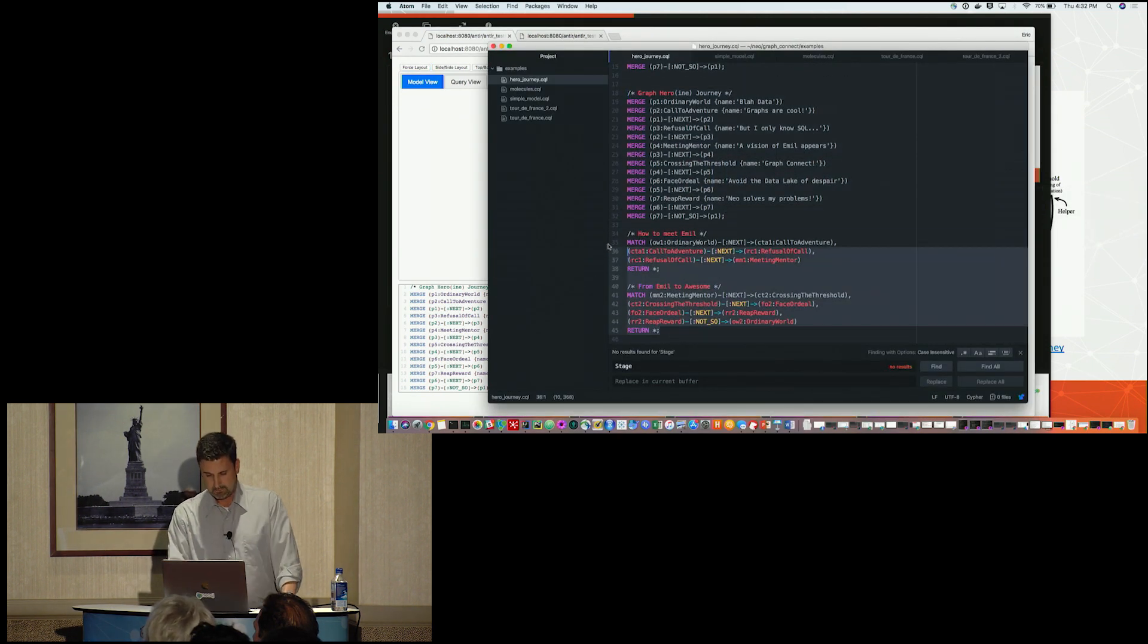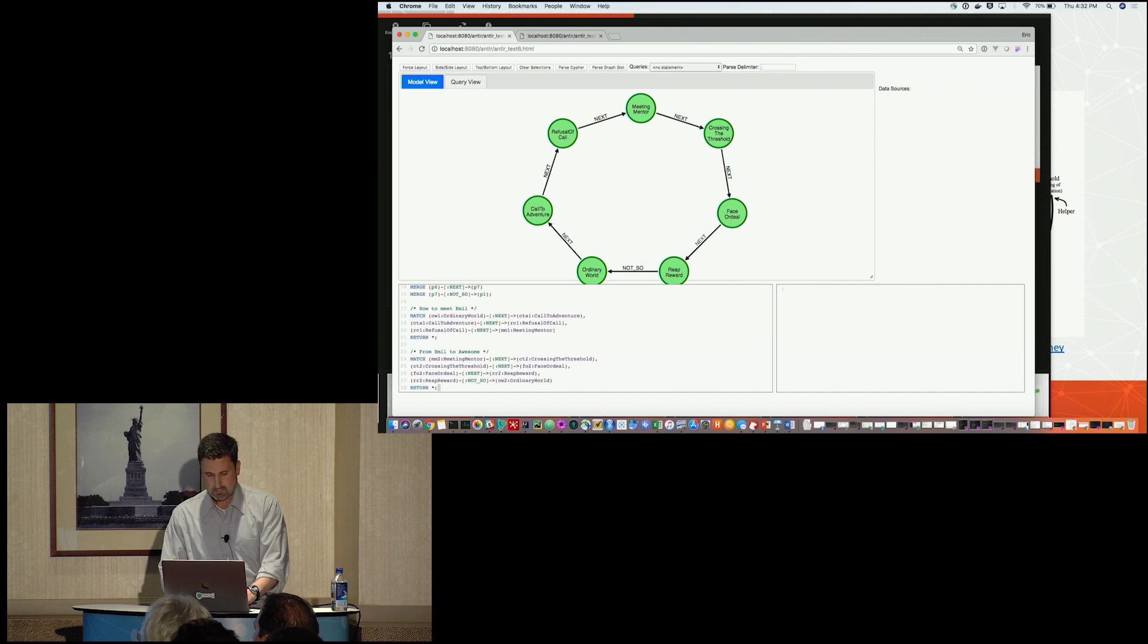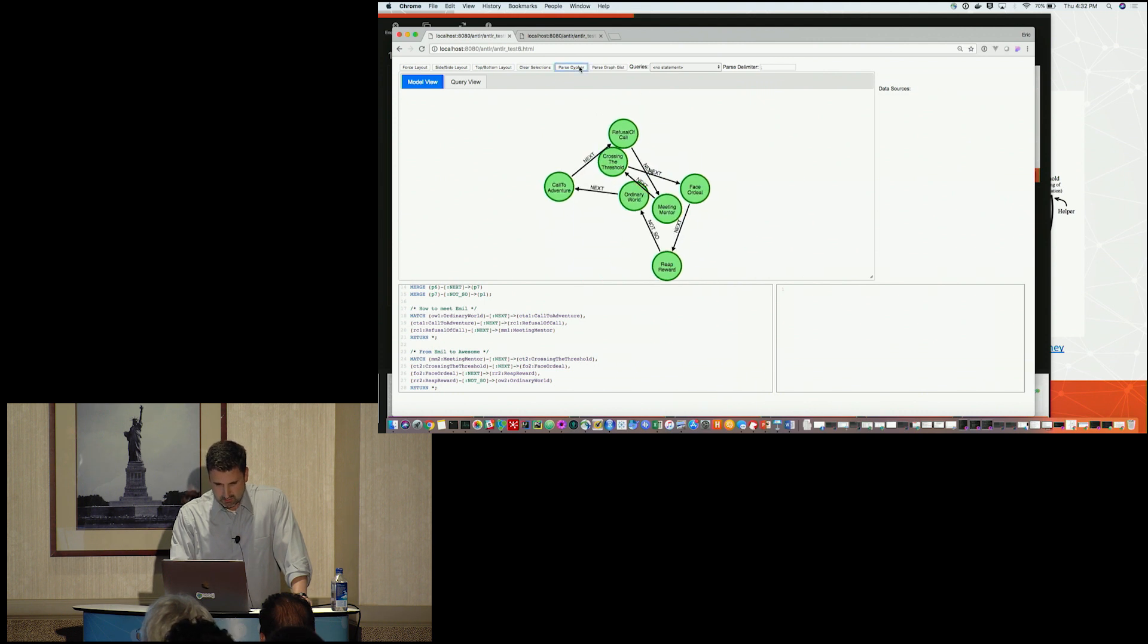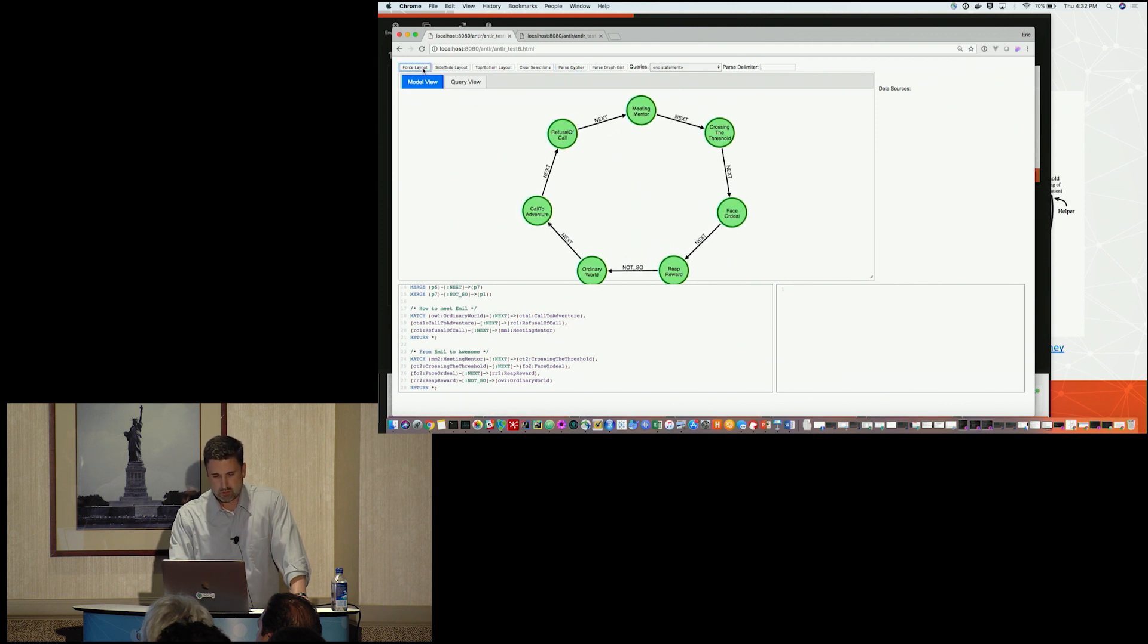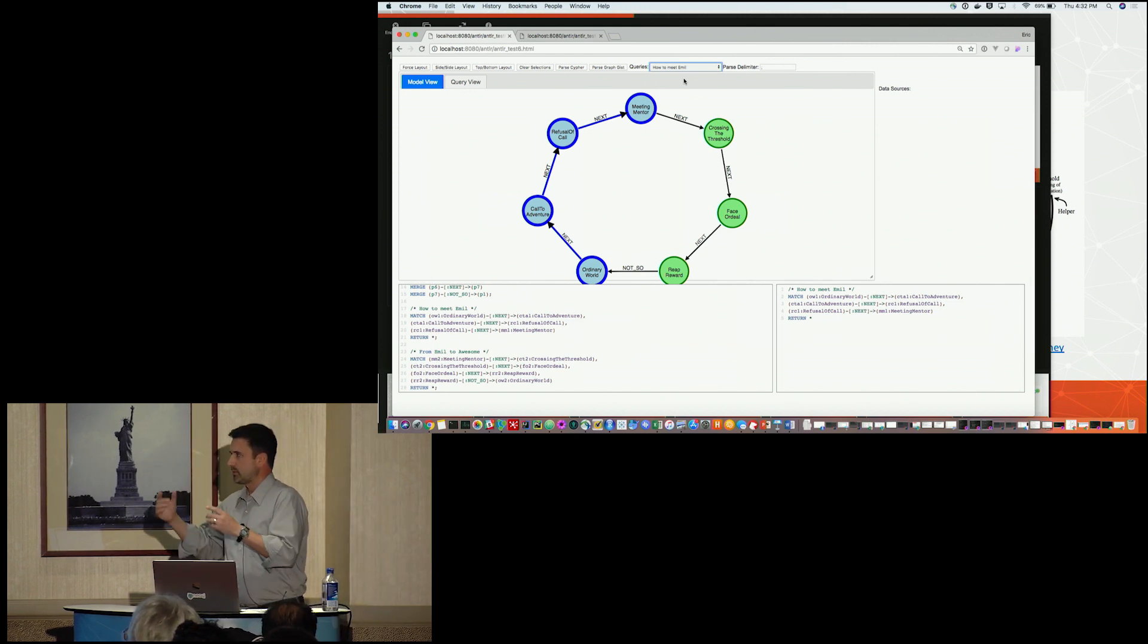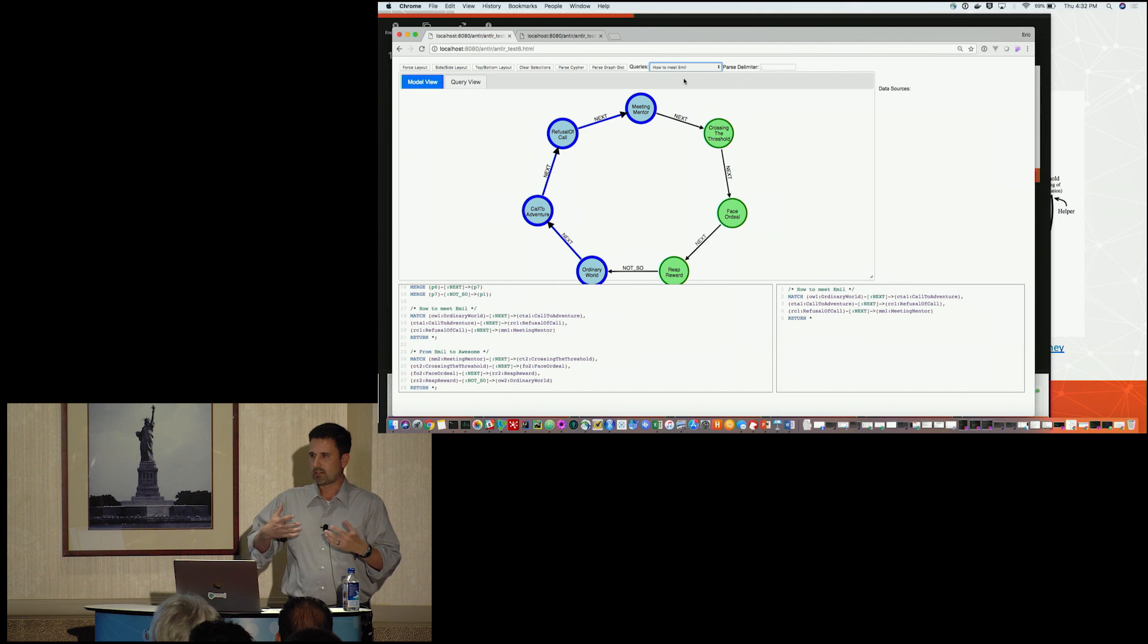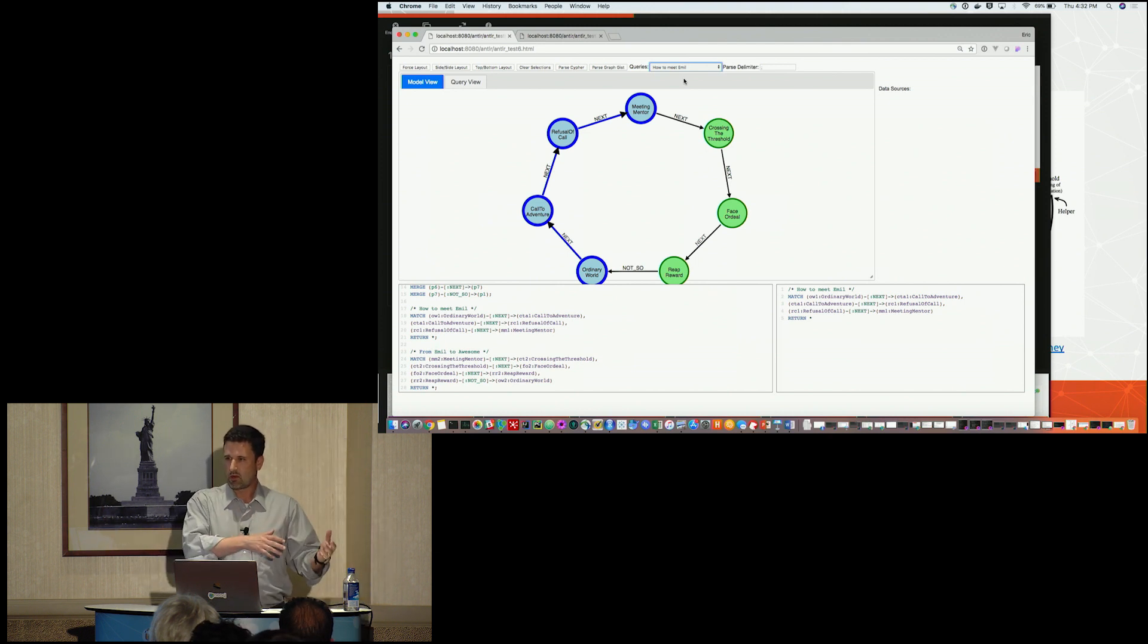Now the fun thing about this is this is showing you the import cipher. What you can do is also say, I want to write a query that shows me the quickest way to meet my mentor, who's Emil. So I'm going to do the same thing. I'm going to parse the cipher. It's the same exact model. But for every cipher statement that's in here, it's going to show up in this little drop-down box. If I click on how do I meet Emil, it's going to highlight the portion of the data model that's being used. So I can see right now at a glance that from the analysis side, this particular query is using like half the data model. So that's one good way you can actually see the context of analysis statements in the context of the overall data model you have.